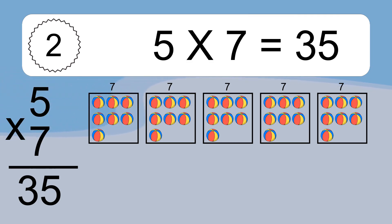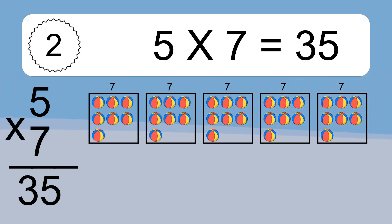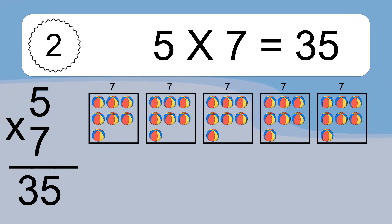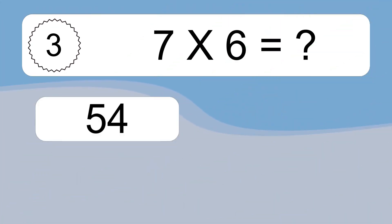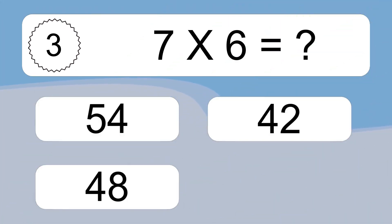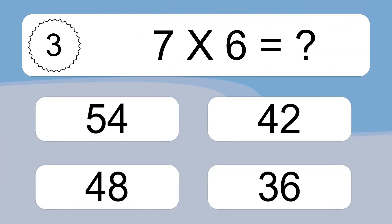We have 5 boxes, and each box has 7 colorful balls inside. If you count all the balls in all the boxes together, you will have 5 times 7 balls. This equals 35 balls.